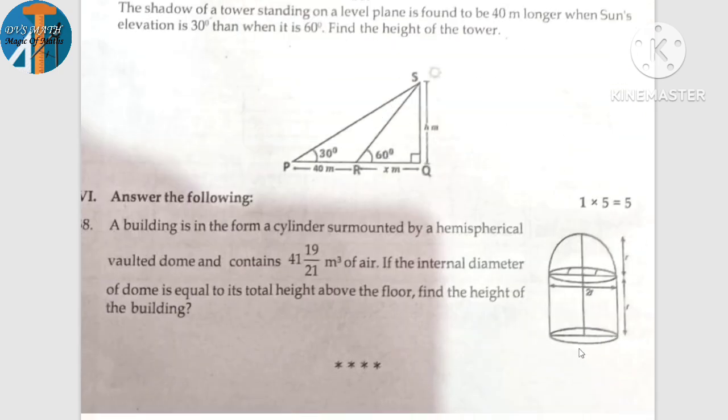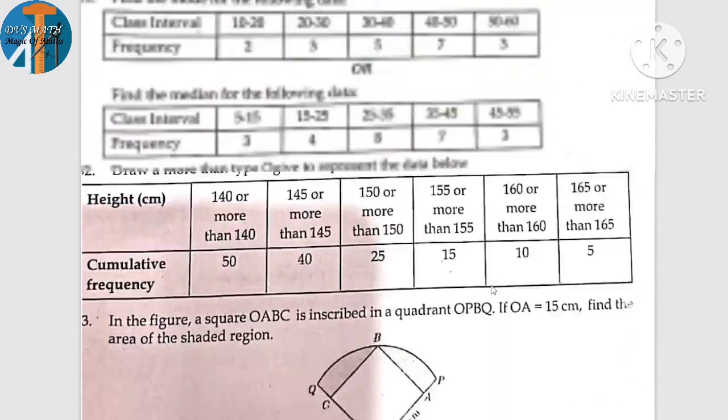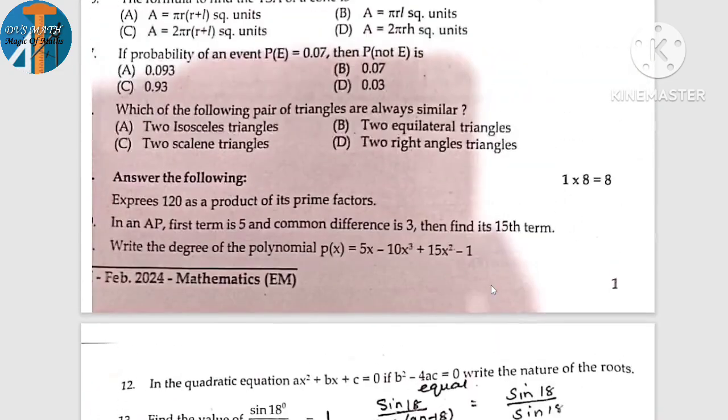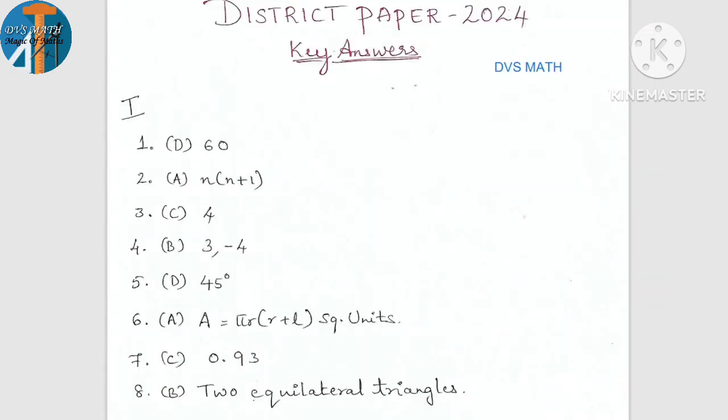Next point is cylinder and hemisphere related to surface area volume. This is a district paper, this is the key answer to this point. I am not going to explain it in detail. Just need to download the PDF from description. You have to go through question paper and answer paper.